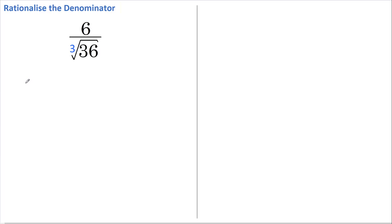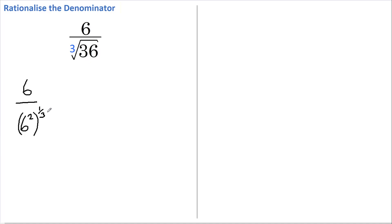Okay, let's start by writing this as 6 divided by 6 squared, to the power of one third. We can do this because 6 squared is the same as 36, and the power of one third is the same as the cube root.